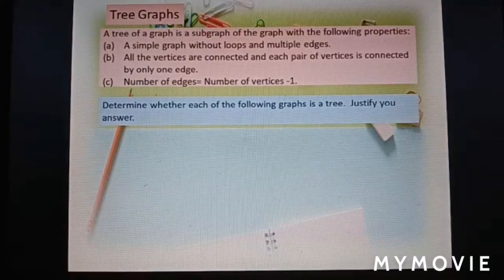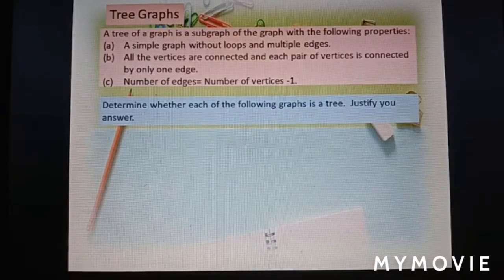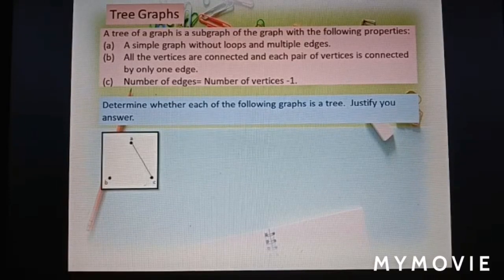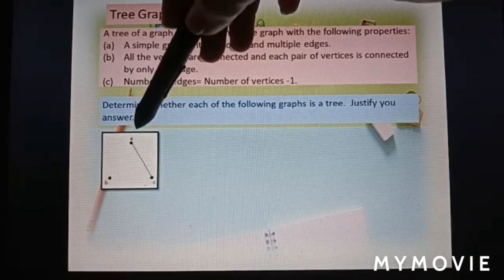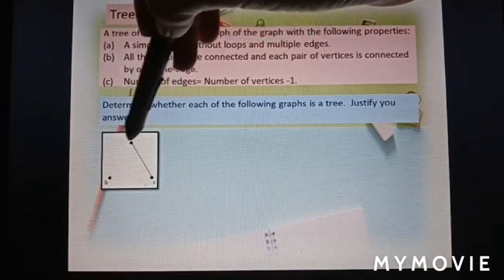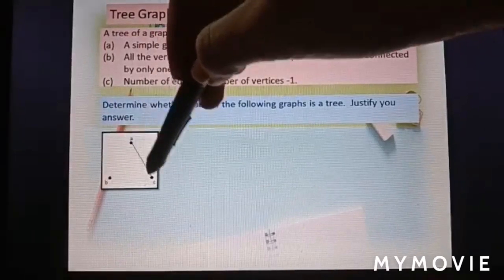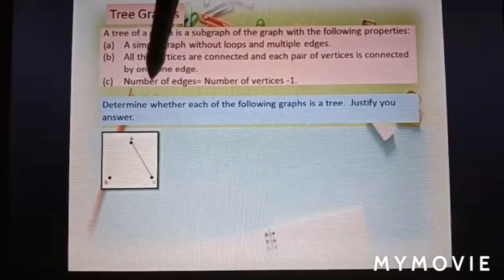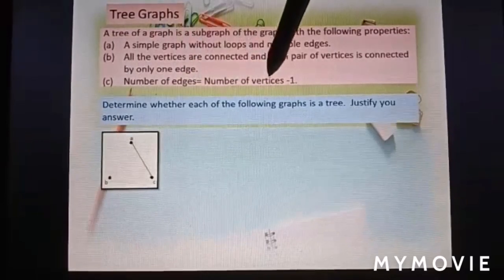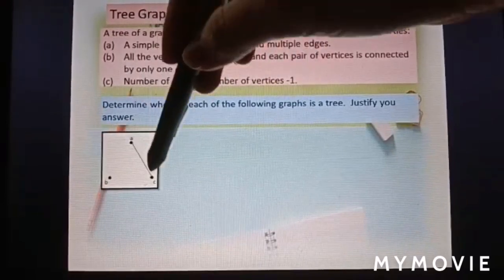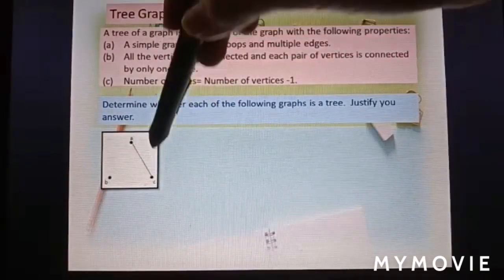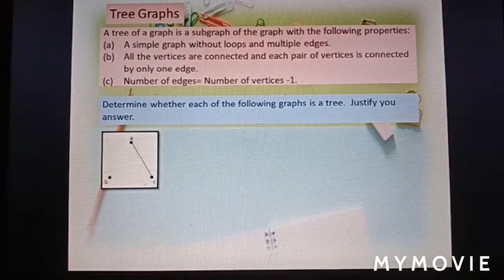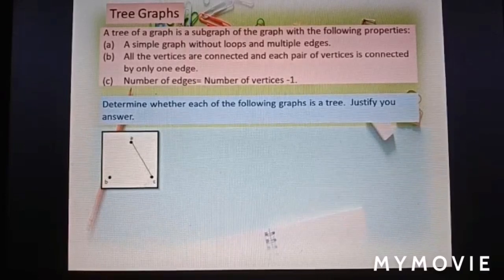Determine whether each of the following graphs is a tree. Justify your answer. Diagram 1: We have 3 vertices A, B, C and 1 edge. According to the property, number of edges equals number of vertices minus 1. So 1 edge, 3 vertices, 3 minus 1 is 2. This is not a tree graph.